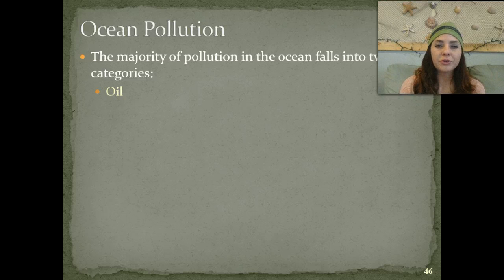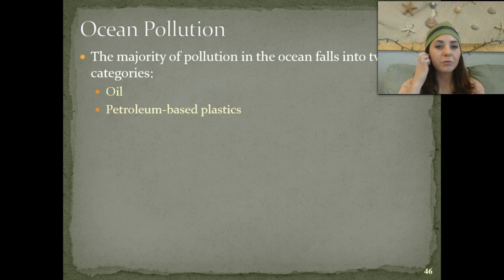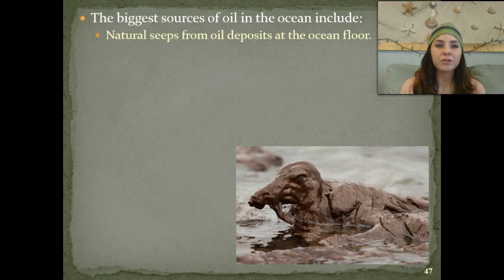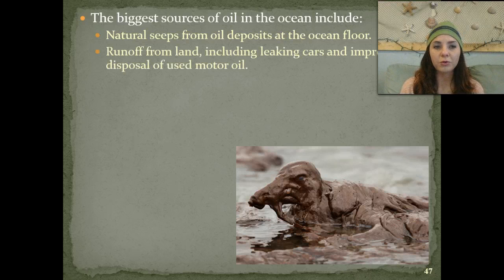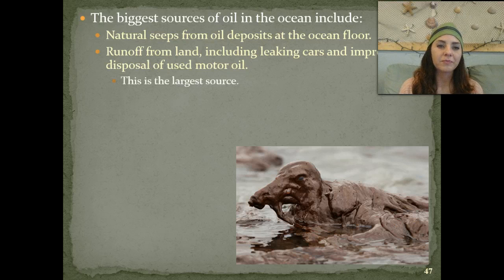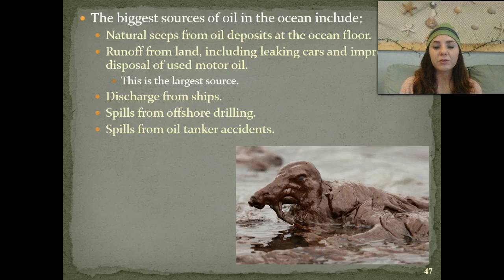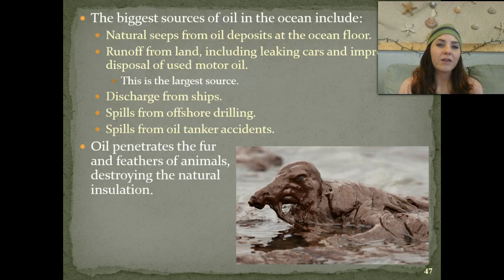The majority of pollution in the ocean falls into two categories: oil and petroleum-based plastics. The biggest sources of oil in the ocean include natural seeps from oil deposits on the ocean floor, runoff from land including leaking cars and improper disposal of used motor oil—which is unfortunately the largest source—discharges from ships, spills from offshore drilling, and spills from oil tankers and accidents.